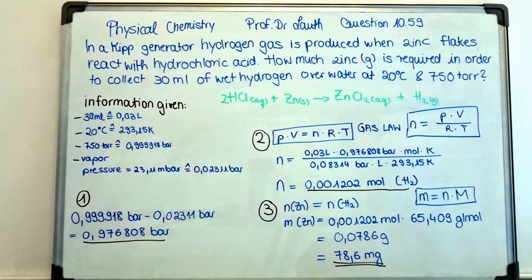Now we want to know how much zinc is required in order to collect 30 ml of wet hydrogen over water at 20 degrees Celsius and a barometric pressure of 750 Torr.